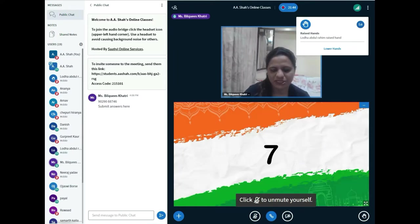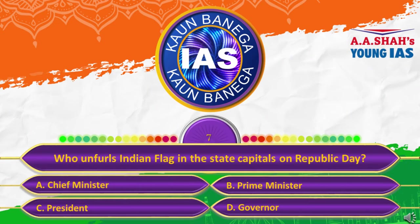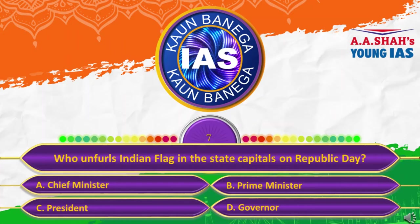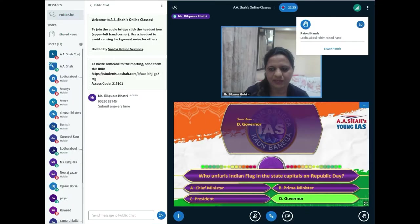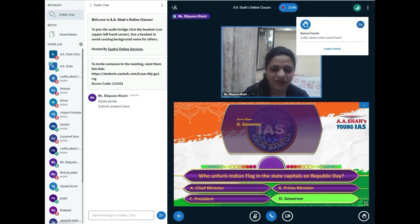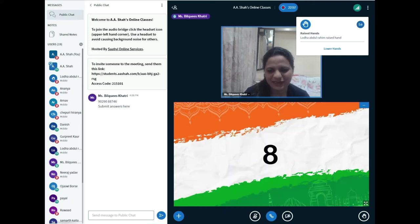Question number 7: Who unfurls the Indian flag in the state capital on Republic Day? A, Chief Minister; B, Prime Minister; C, President; or D, Governor? The correct answer is D, Governor. At the national level, the President unfurls the flag in Delhi. In each state, the state Governor unfurls the Indian flag. This was a little tricky one — I hope you got it right, and if not, you've learned something new.